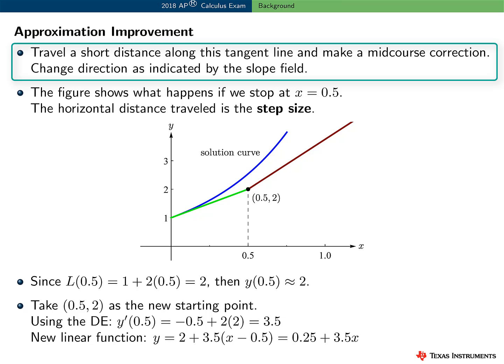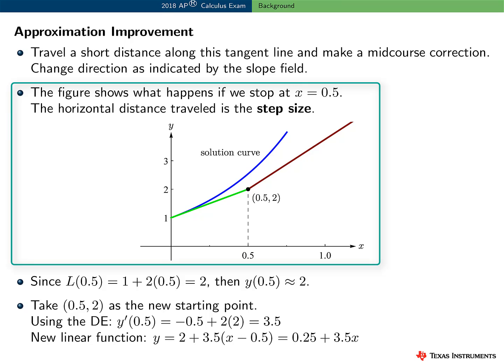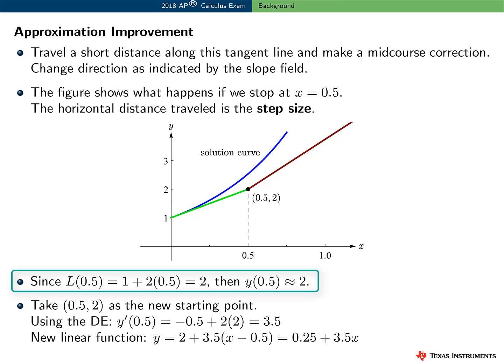Euler's Method improves on this approximation by proceeding only a short distance along the tangent line, and then making a mid-course correction by changing direction as indicated by the slope field. This figure shows what happens if we start out along the tangent line, but stop when x is equal to 0.5. The horizontal distance traveled is called the step size. Since L of 0.5 is equal to 2, then y of 0.5 is approximately 2. That is, the y value on the solution curve at x equals 0.5 is approximately 2.